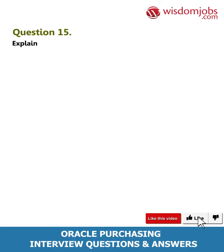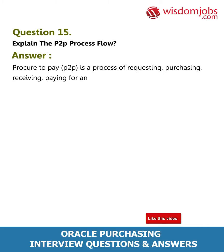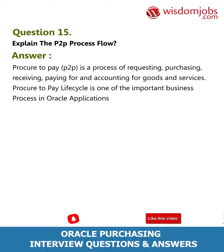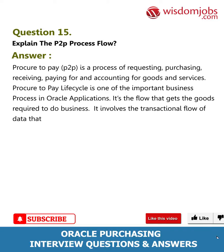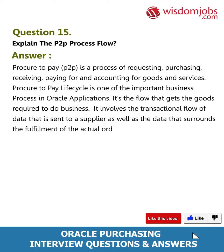Question 15: Explain the P2P process flow. Answer: Procure to Pay (P2P) is a process of requesting, purchasing, receiving, paying for, and accounting for goods and services. The procure-to-pay lifecycle is one of the important business processes in Oracle Applications. It is the flow that gets the goods required to do business, involving the transactional flow of data sent to a supplier as well as the data surrounding fulfillment of the actual order.